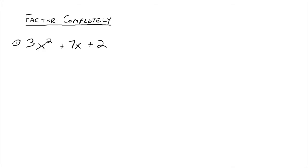For factoring trinomials where the first coefficient is something other than 1 — this time it's a 3 — there are several ways to go about doing this. I'm only going to talk about one: essentially trial and error. It involves understanding how to multiply binomials together. Once you practice this a little bit, it can become faster. If it's going to factor, it's going to factor into a binomial times a binomial.